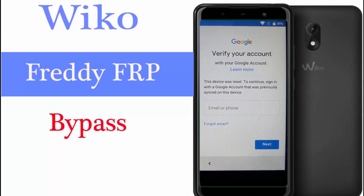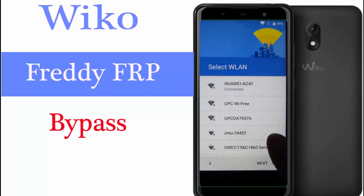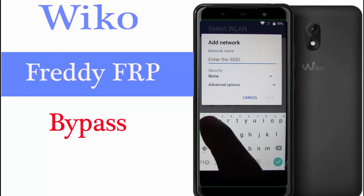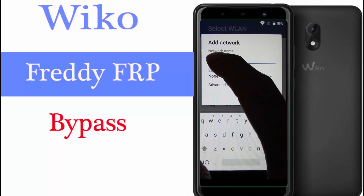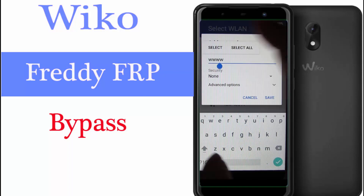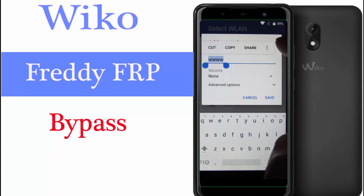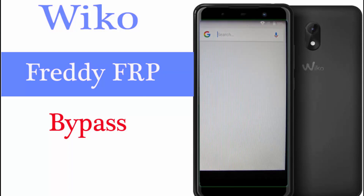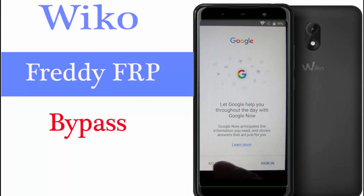Here is the FRP lock. So what should you do — just press the back key and scroll down a little, then tap 'Add another network'. Type anything, then select all, choose the three-dotted menu, and choose search.